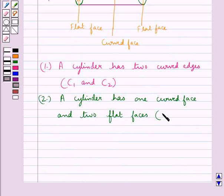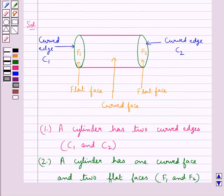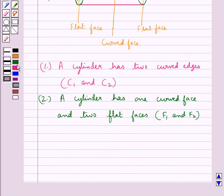So we have two flat faces which are F1 and F2. Now let's talk about the vertices. As you know, the corners of a solid shape are called its vertices. So in this figure of a cylinder there are no corners. So we say that a cylinder has no vertex.